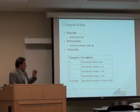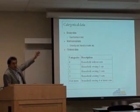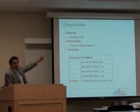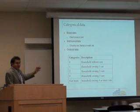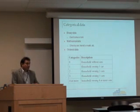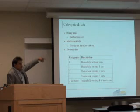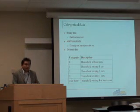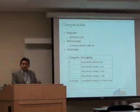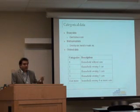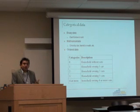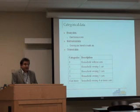When your dependent variable is either binomial, multinomial, or ordinal, you cannot use a simple regression model. You cannot use any of these three types of data as the dependent variable in a simple regression model because you will get biased output. For example, if home ownership is coded 0 and 1, what if you get a forecasted value of minus 0.2? What does it mean? How can you have a negative value?